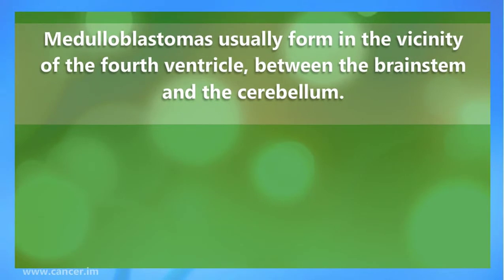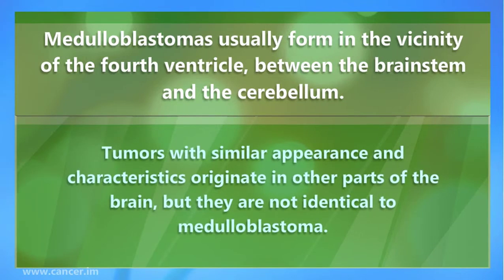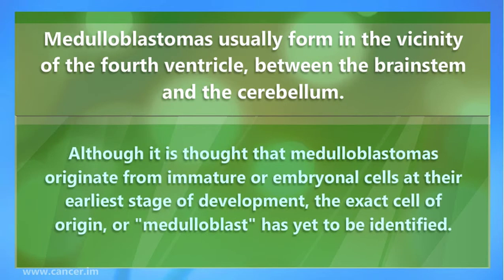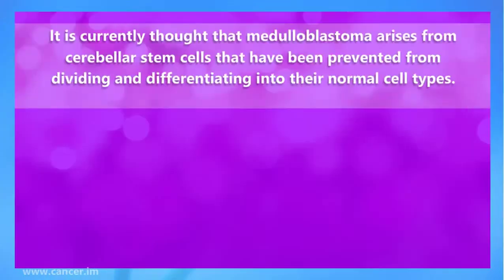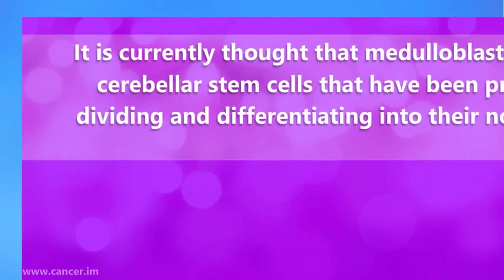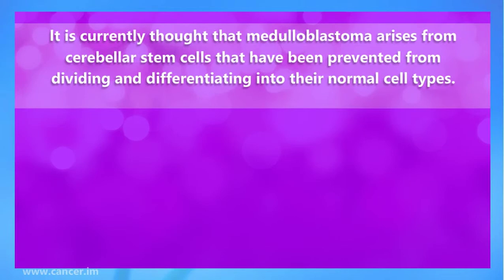Medulloblastomas usually form in the vicinity of the fourth ventricle, between the brainstem and the cerebellum. Tumors with similar appearance and characteristics may originate in other parts of the brain, but they are not identical to medulloblastoma. Although it is thought that medulloblastomas originate from immature or embryonal cells at their earliest stage of development, the exact cell of origin — the medulloblast — has yet to be identified. It is currently thought that medulloblastoma arises from cerebellar stem cells prevented from dividing and differentiating into their normal cell types.